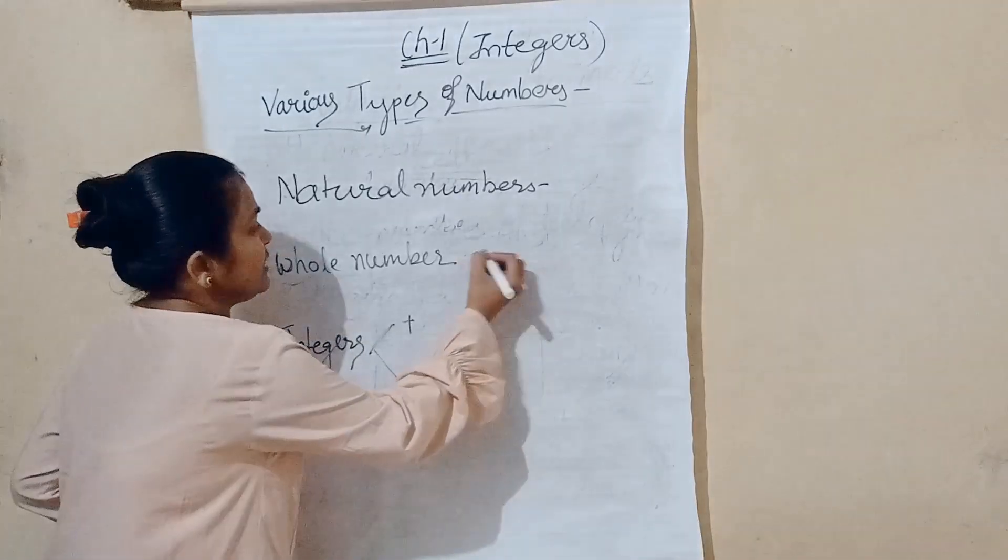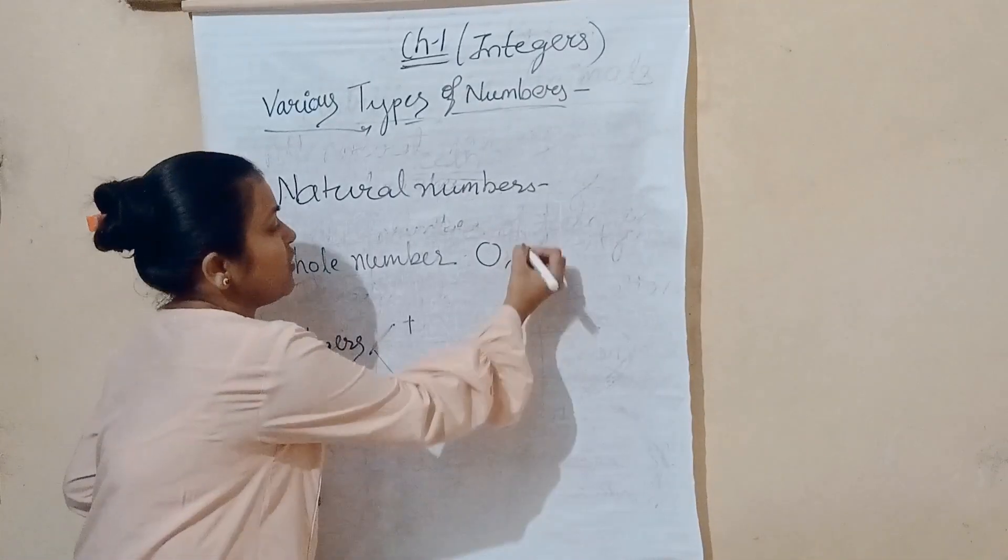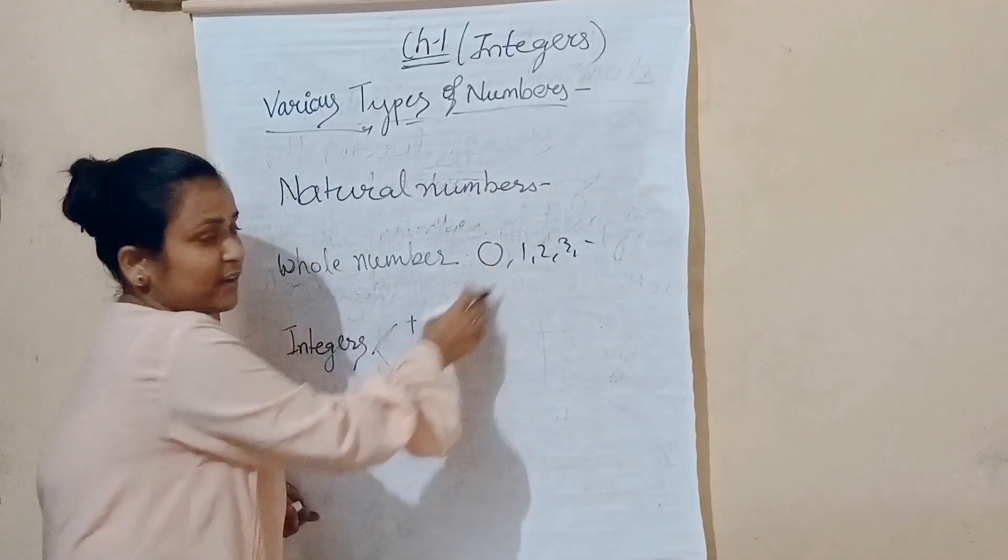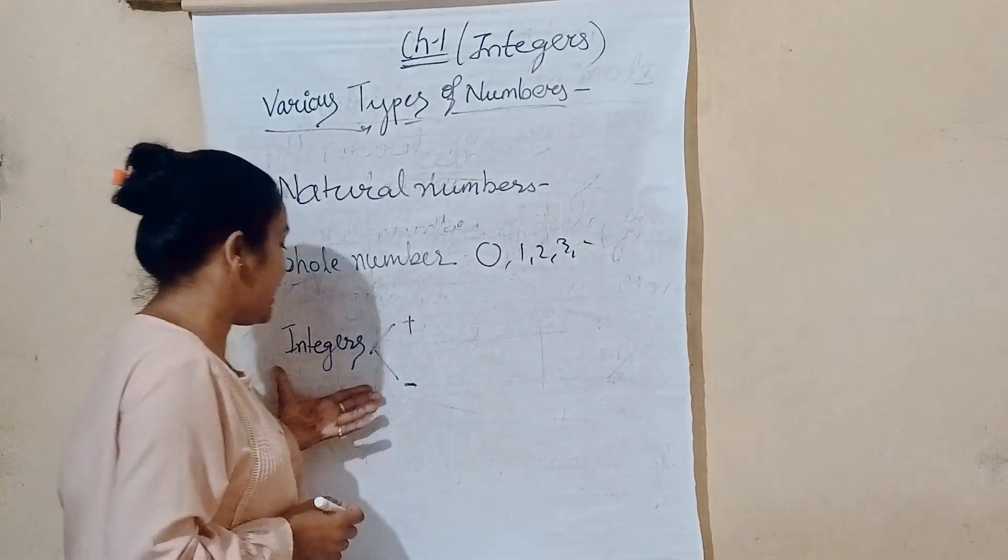The whole number is included. The whole number is included as 0. It is starting from 0. Like 0, 1, 2, 3, 4, 5. It is starting from 0. The whole number is called.